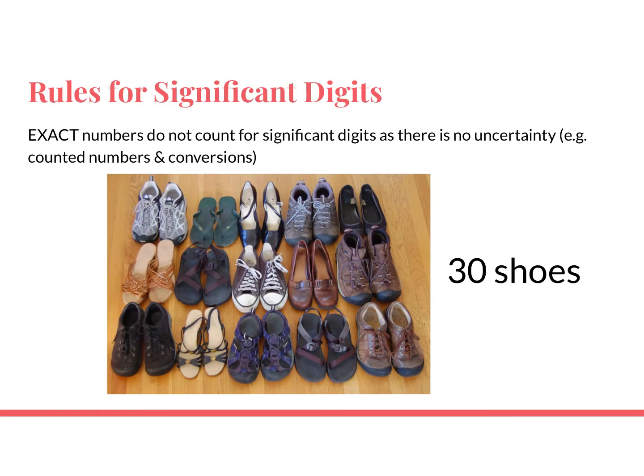First of all, exact numbers do not count for sig figs because there's absolutely no uncertainty. For example, if I'm counting these shoes, there are 30 shoes here — exactly 30. So this does not count as a sig fig.